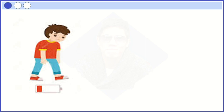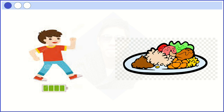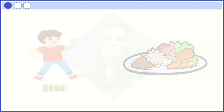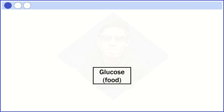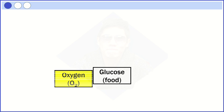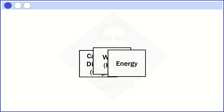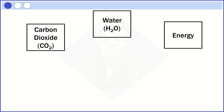How do we get energy? Most of us will answer from the food we eat. Yes, you are correct. But the energy is stored in the food, so it needs to be unlocked. The food needs to be broken down and this requires oxygen. Energy will be released from the food with the help of oxygen. This process is called respiration.